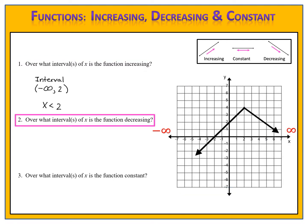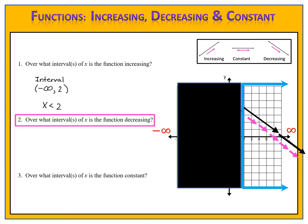Now let's look at the second question: over what intervals of x is the function decreasing? We look at the graph and see the function is decreasing over here. We use the blue line to identify where the interval begins and ends. It begins when x is 2, but where does it end on the right-hand side? We have an arrow on the right-hand side, which means the graph goes in that direction forever toward positive infinity. The graph is decreasing starting at 2 and going to positive infinity. We can write that using interval notation as (2, ∞), or as a simple inequality: x is greater than 2.